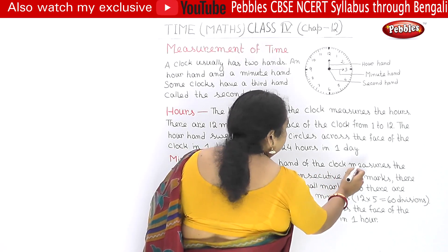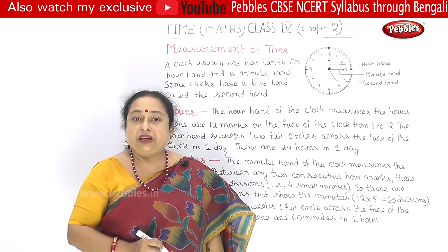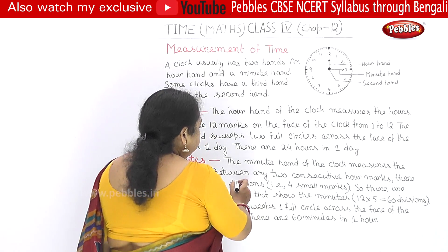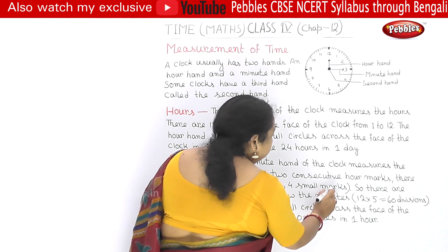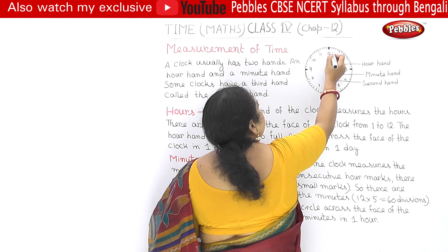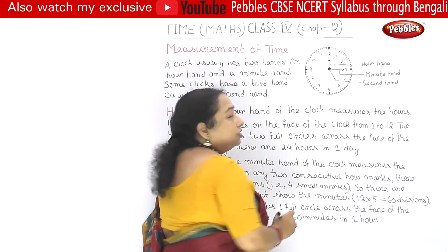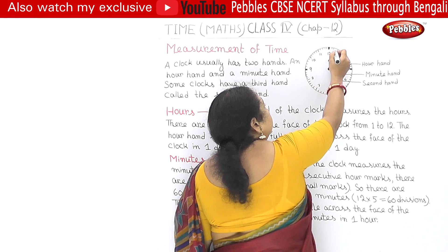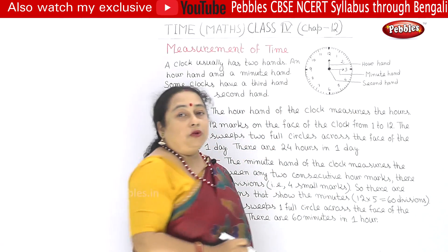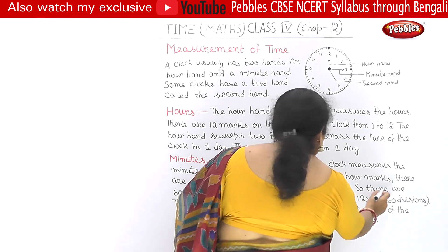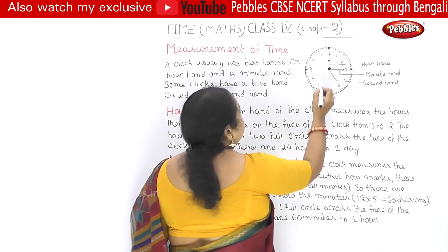The minute-hand of the clock measures the minutes. The hour-hand measures the hours, and the minute-hand measures the minutes. Between any two consecutive hour marks there are five small divisions, that is four small marks. So there are 60 small divisions that show the minutes.